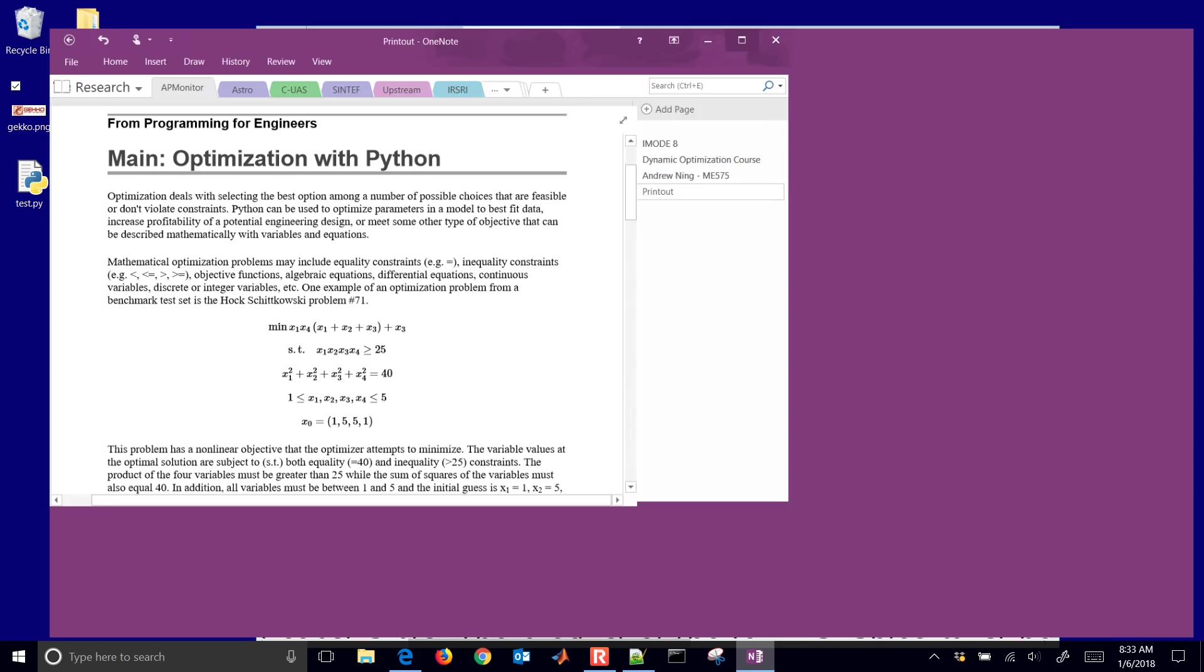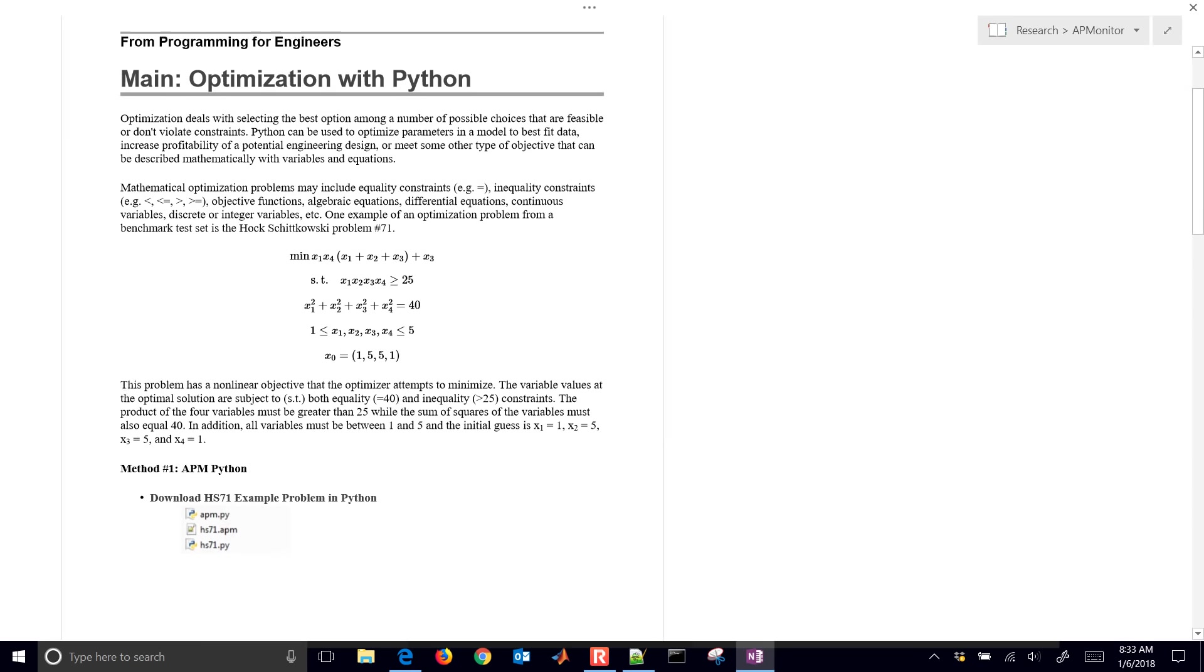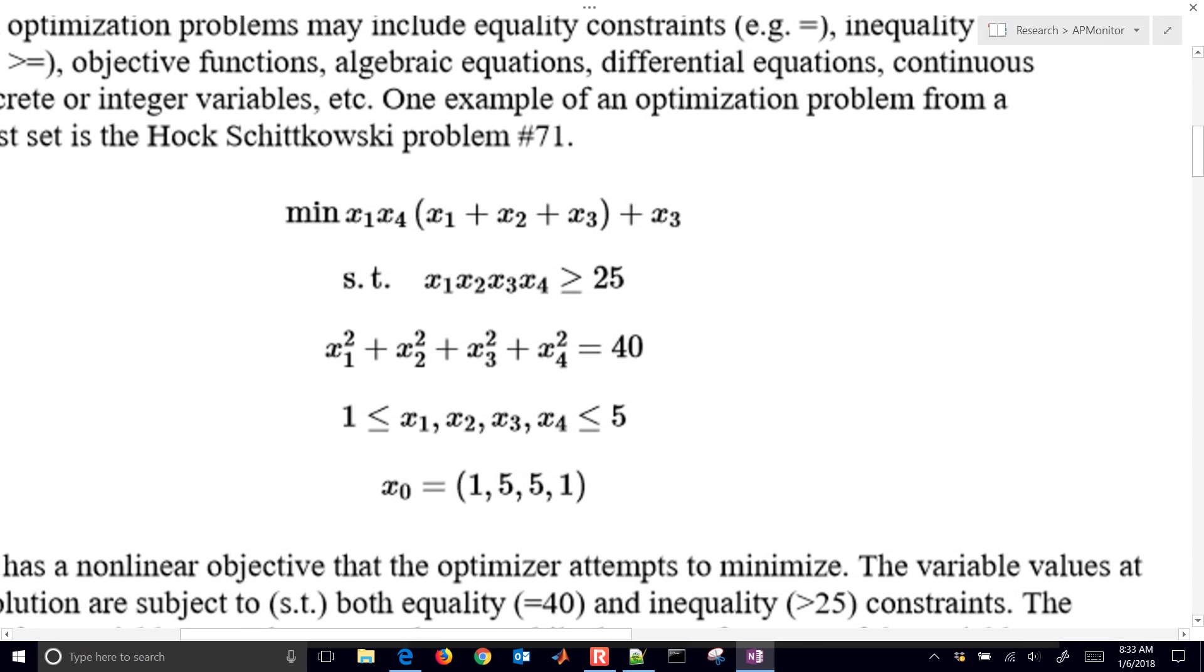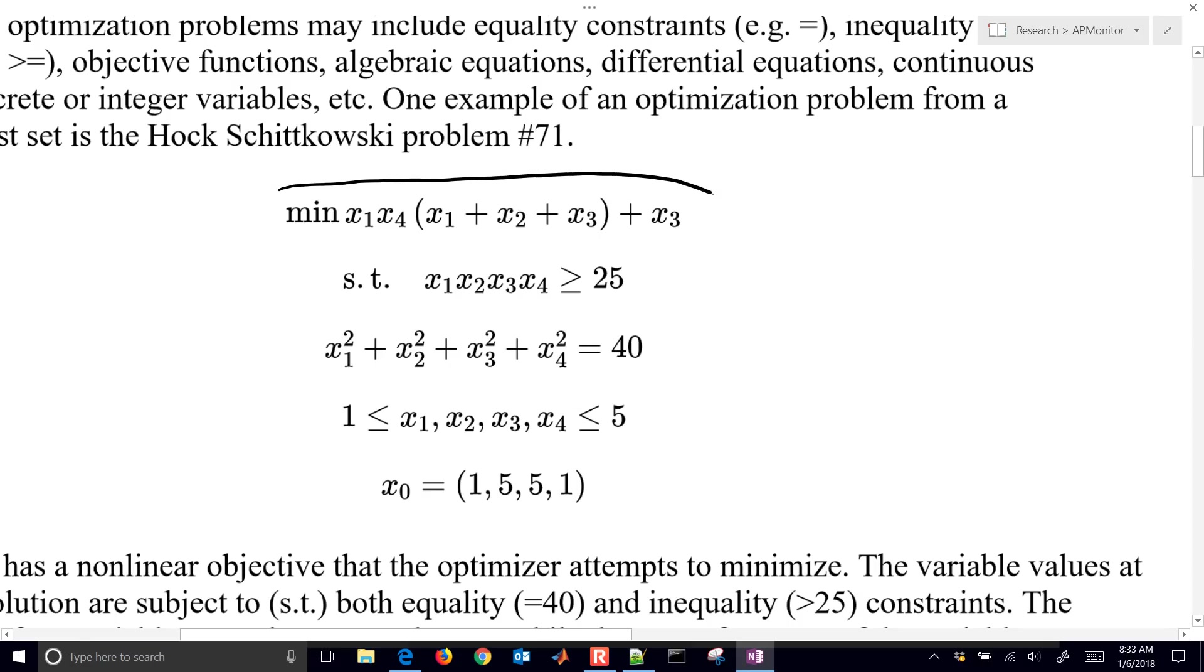I'm just going to go over here to be able to write on this. And we have an objective function right here with four variables. We have x1 through x4 with an upper bound of 5 and a lower bound of 1. We have two constraints. One is an inequality constraint. The product has to be greater than 25. And then the sum of the squares has to be equal to 40.